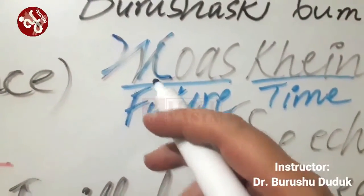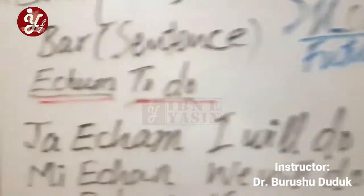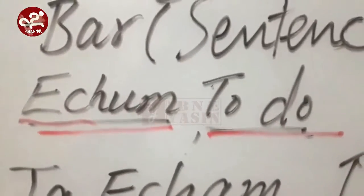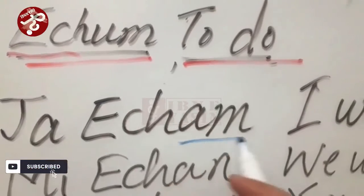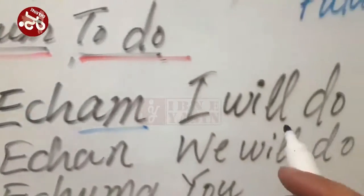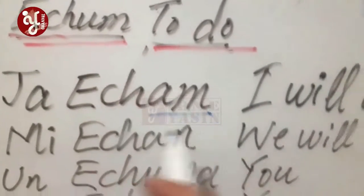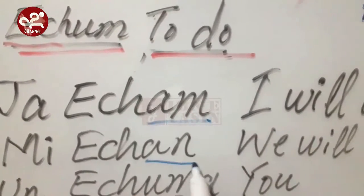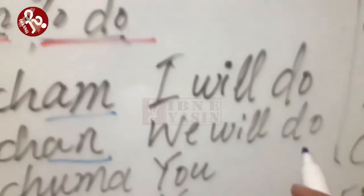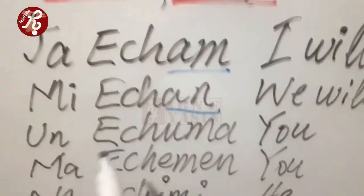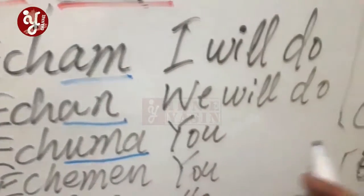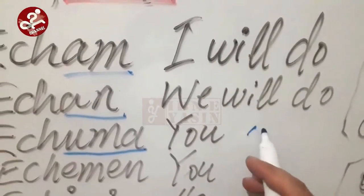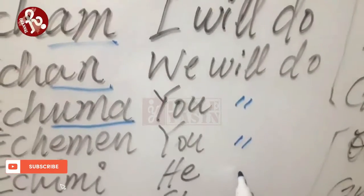Roaskhen — this 're' is also used in Russian language. We are discussing 'echom,' meaning 'to do.' The first is 'ja echom' — 'I will do.' Then 'me echom' — 'we will do.' Then 'un echomah' — 'you will do.' Everywhere you have to add 'will do.'